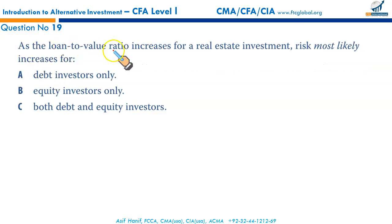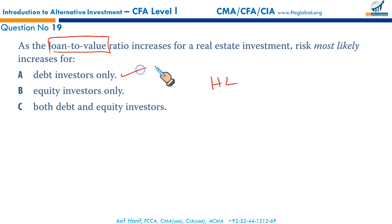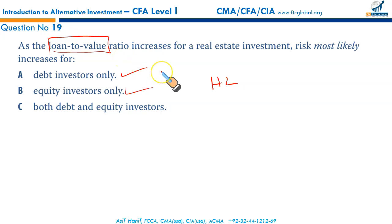As the loan-to-value ratio increases for a real estate investment, risk most likely increases for both debt and equity investors. When the loan-to-value ratio increases, it results in higher leverage, which increases risk to both the debt investor and equity investor. That makes C the correct option.